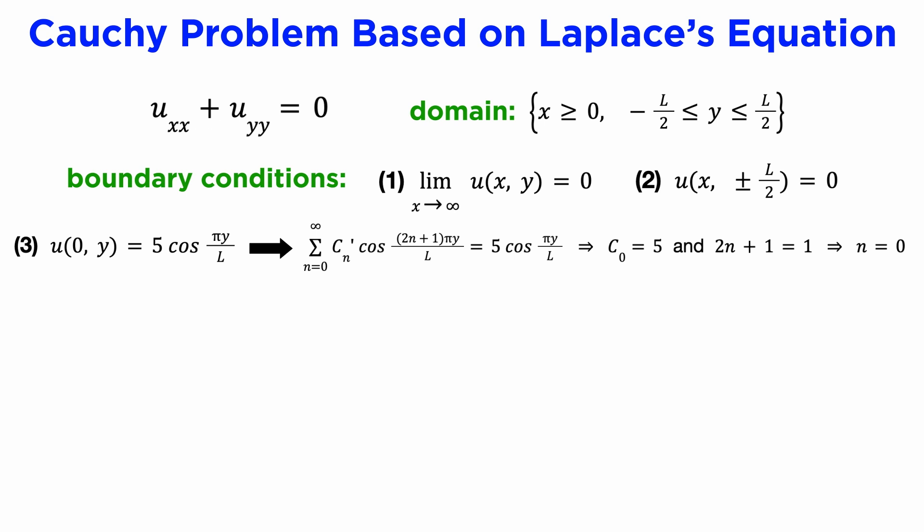And that will be the fundamental solution of n equals 0, and we also get c0 equals 5 for this frequency. Our final solution that satisfies all three of our conditions is then u of xy equals 5e to the minus pi x over L times cosine of pi y over L.